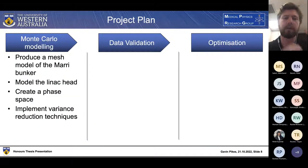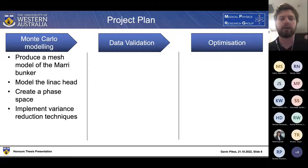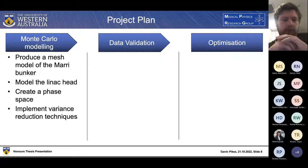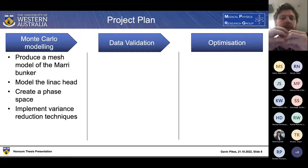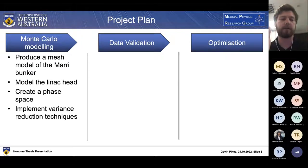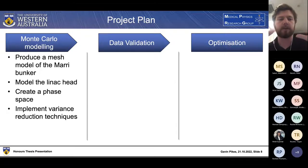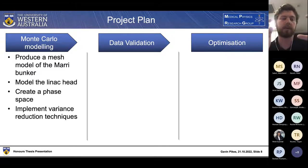My project plan has three main components. The first is the Monte Carlo modelling stage: producing a mesh model of the Mary linac bunker using the floor plan, then producing a model of the linac head with all its major components to simulate a holistic beam, and then storing the beam as it leaves the linac head in a phase space file. This stores the energy, direction, and particle type of particles impacting that plane to a file, so we can sample from it when simulating the bunker itself, cutting down on computational time significantly.